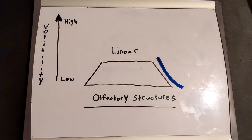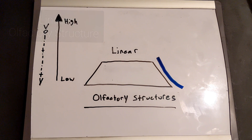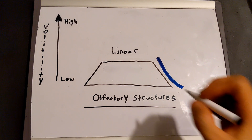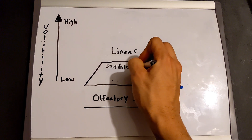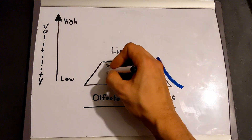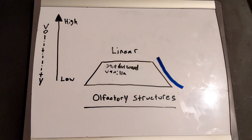That's all I'm going to cover today regarding the traditional olfactory pyramid. Next let's move into further olfactory structures. Here's an example of the linear fragrance structure, which is only composed of one or two notes — for example sandalwood and/or vanilla. These fragrances are designed to stay the same from start to finish, with the individual notes working together as an accord.